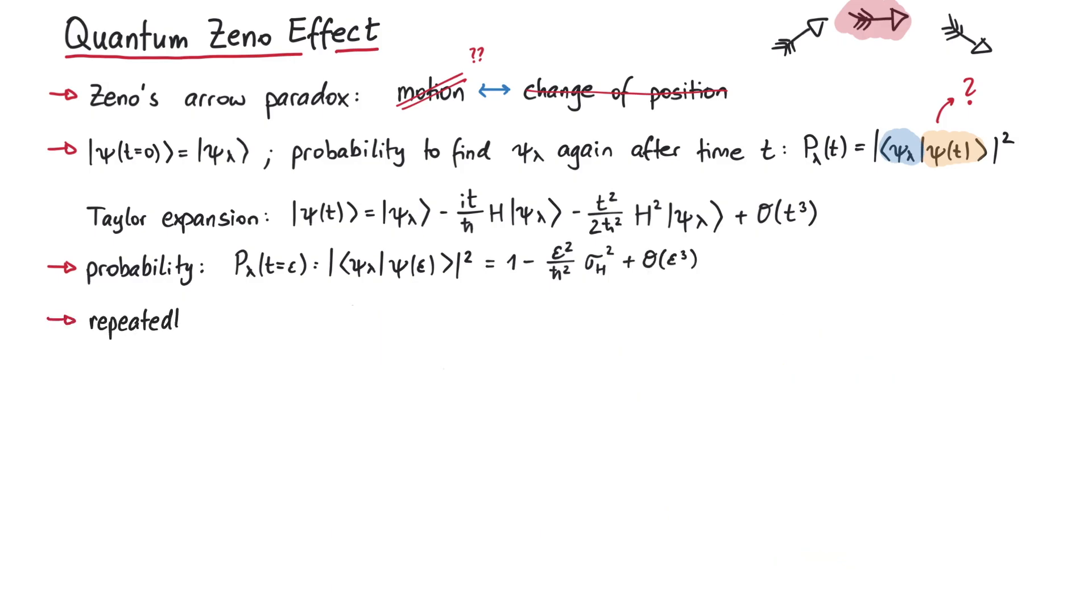If we now repeatedly perform the same measurement, the probability to find the quantum state in the initial state after some finite time t is given by n copies of this probability that we just calculated, where n is the number of times we perform the measurement. After each measurement, we start from psi lambda again, so that's why it's always the same probability.